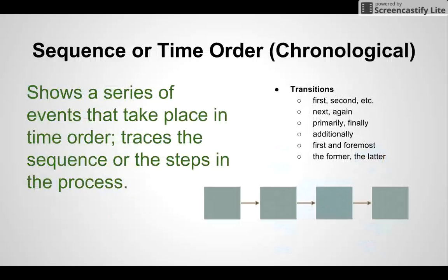The next one is sequence or time order, chronological. This shows a series of events that take place in time order. It traces the sequence or the steps in a process. Some transitions will be first, second, next, again,